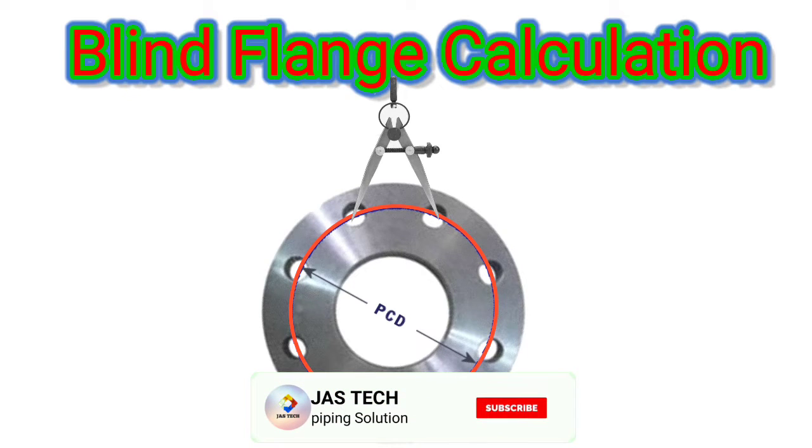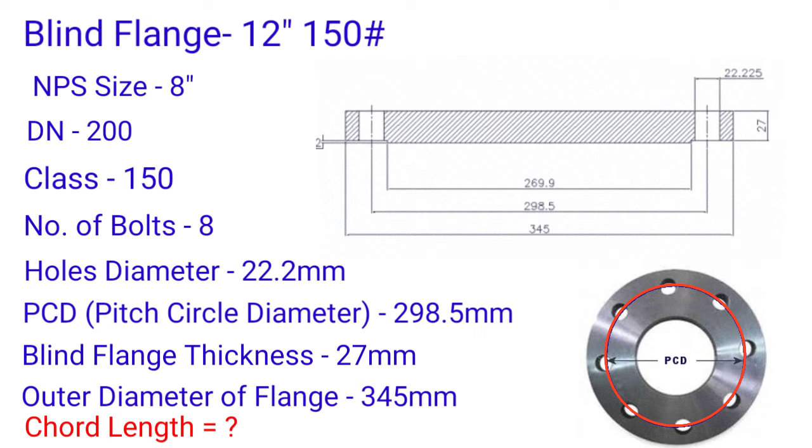We want to calculate hole to hole chord length. We take sample blind flange 12 inch 150 pound. So NPS size 8 inch, DN 200, class 150.